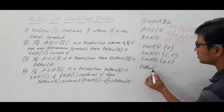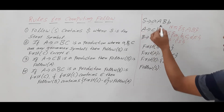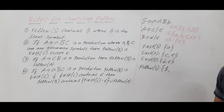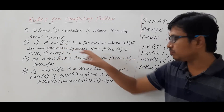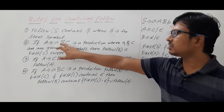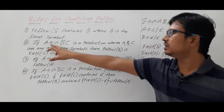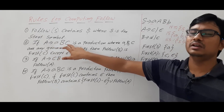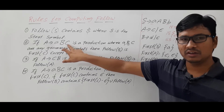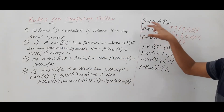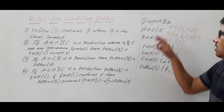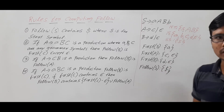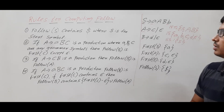Now we will discuss how to get the FOLLOW of all non-terminals. FOLLOW of S — it is the start symbol, so it will consist of dollar. Now you need to check where S appears in the right-hand side of productions. If S is in the right-hand side, you look at what comes after it. Looking at these three productions, S is not there in the right-hand side, so FOLLOW of S is only dollar.